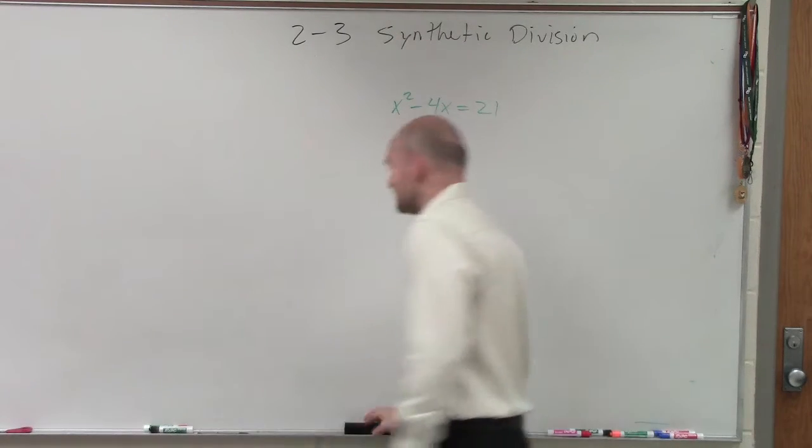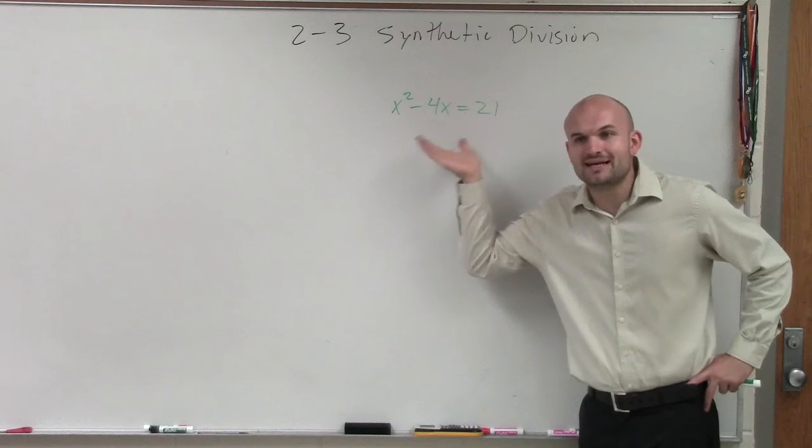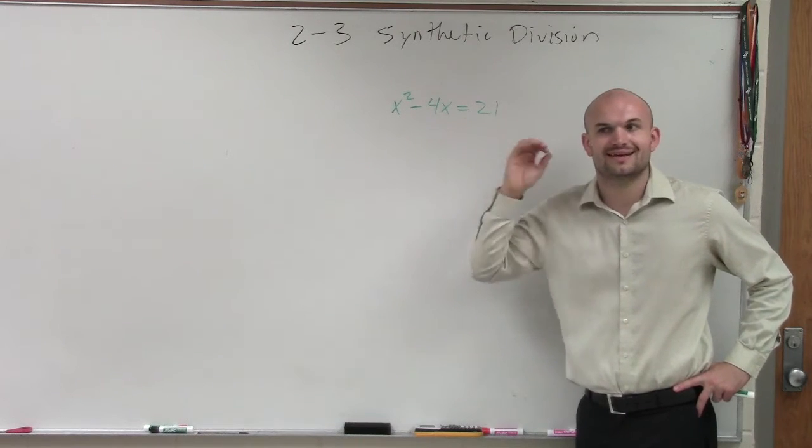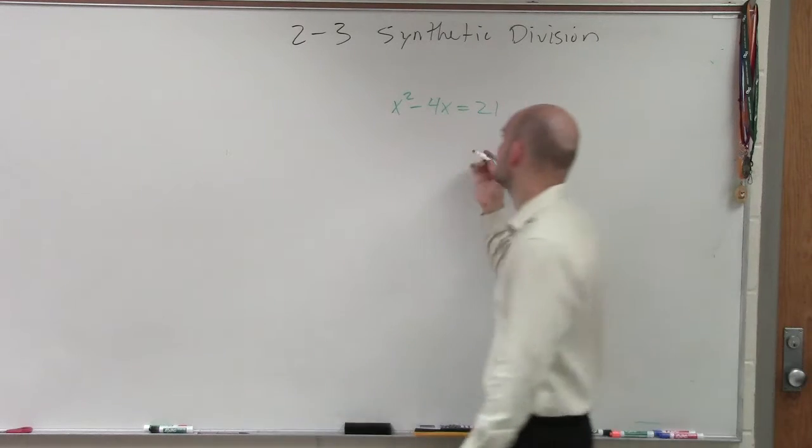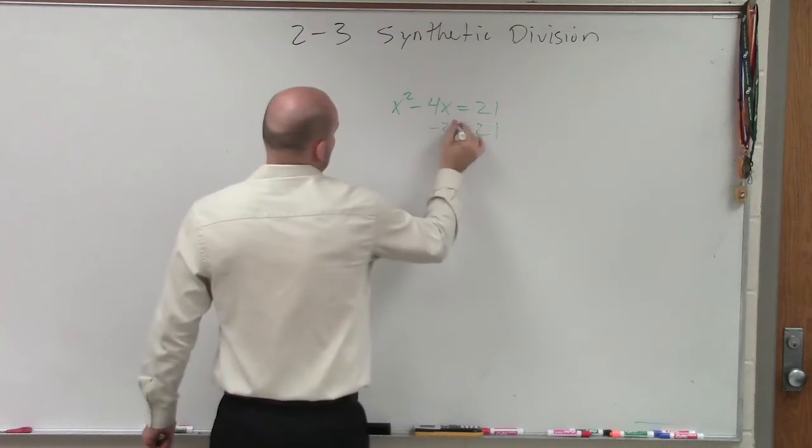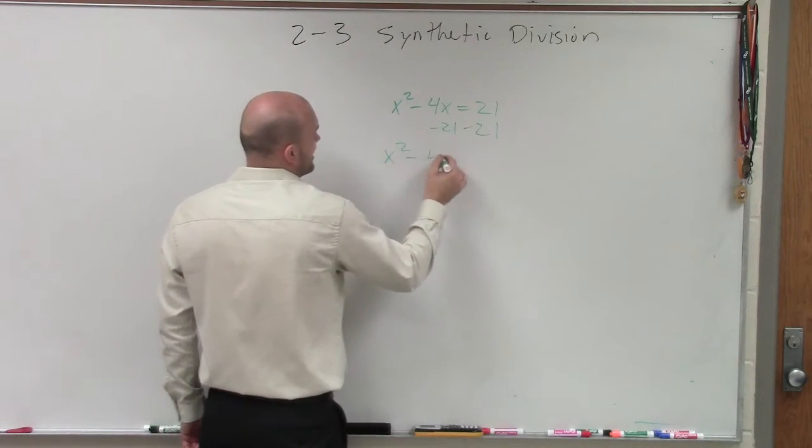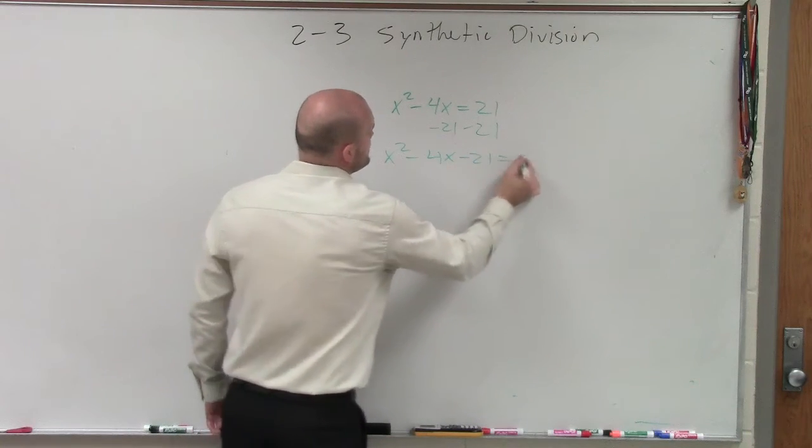So if I'm giving you a problem like this, what do you think we want to make it equal to? Zero, right? So take this function and set it equal to zero. So subtracting 21, therefore I have x squared minus 4x minus 21 equals zero.